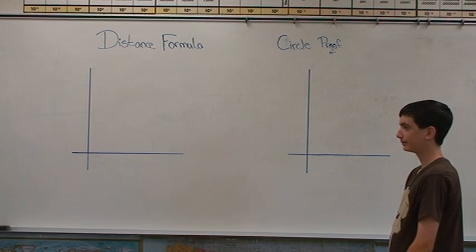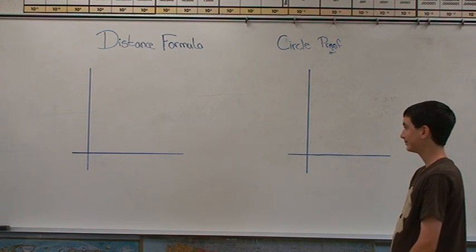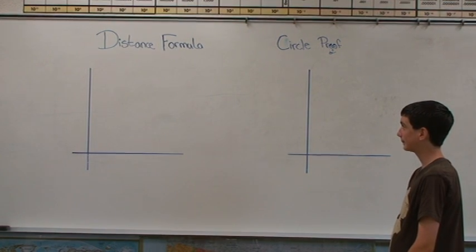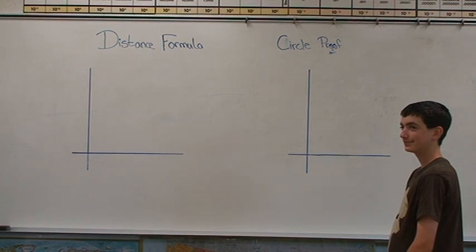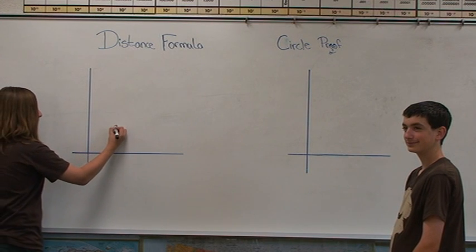This is the circle proof. To prove the circle equation, first we need the distance formula, which will need two general points, an x1, y1 point and an x2, y2 point.